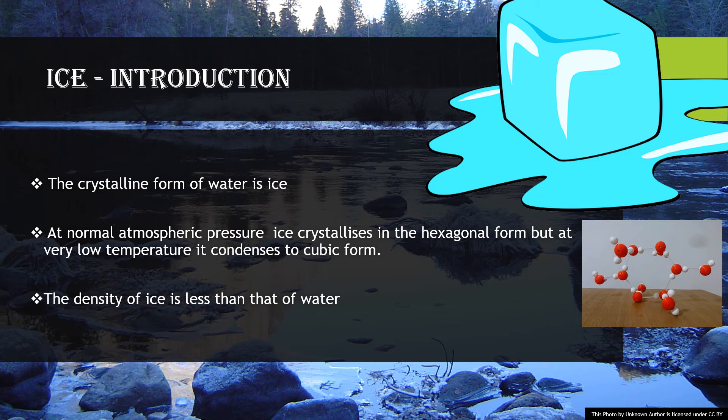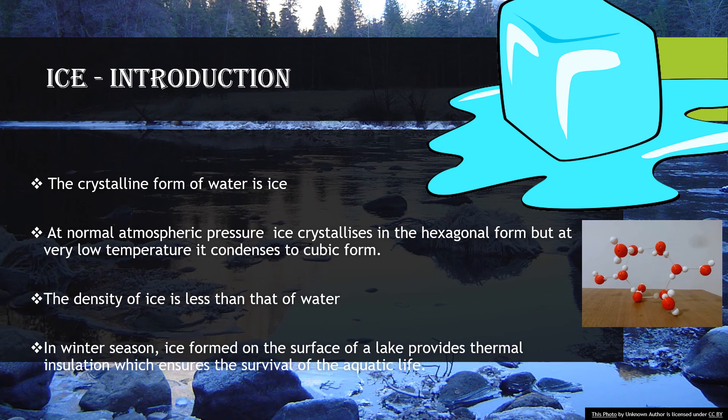The density of ice is less than that of water. That is, the density of ice is 0.9167 gram per centimeter cube at 273 Kelvin whereas water has 0.998 gram per centimeter cube at the same temperature.